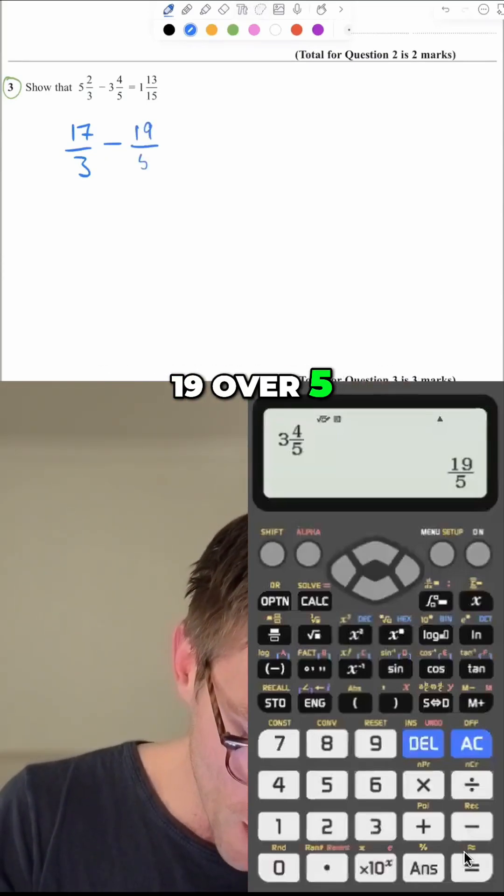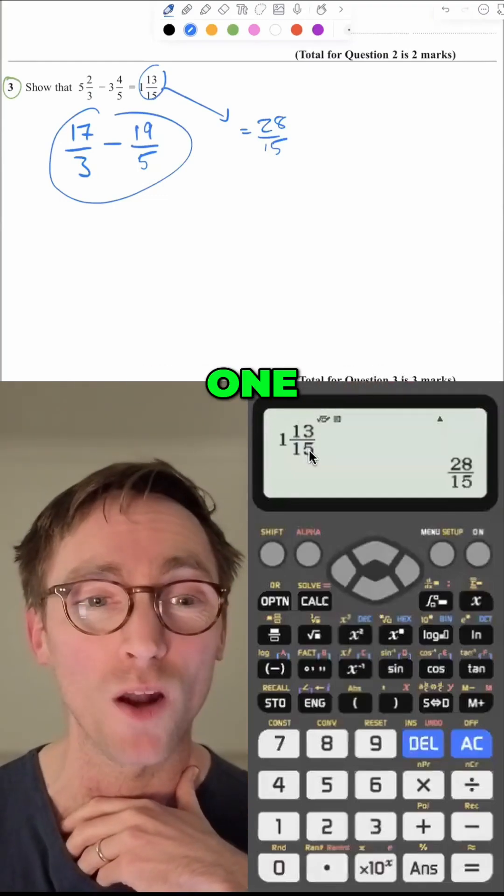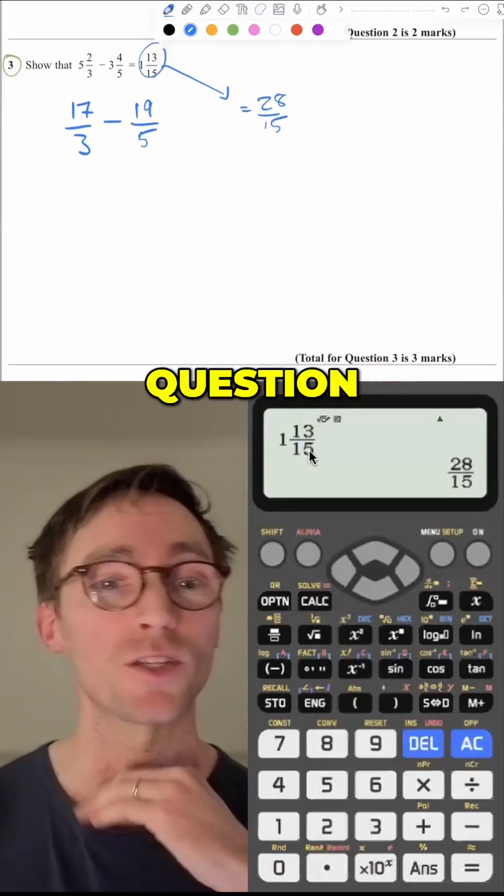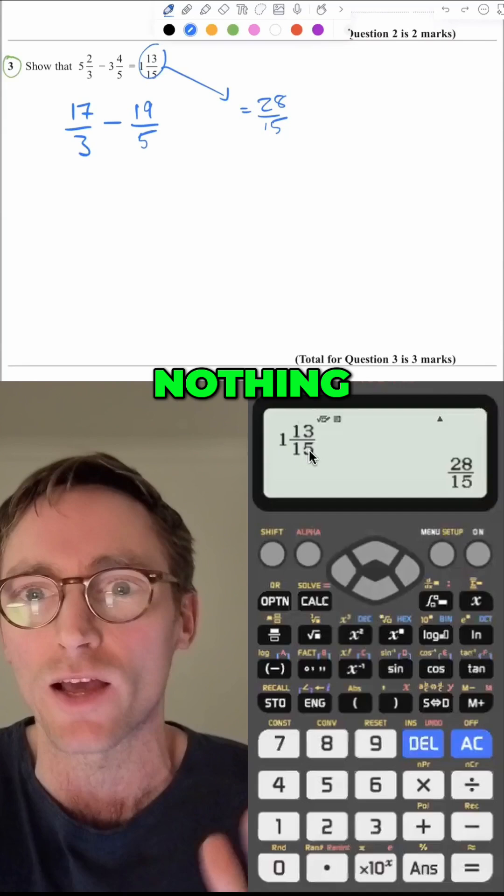19 over 5. It turns out you got a mark for writing those or even one of them. I think even one of them you got a mark. So again, three mark question. You're getting one mark just for doing literally nothing.